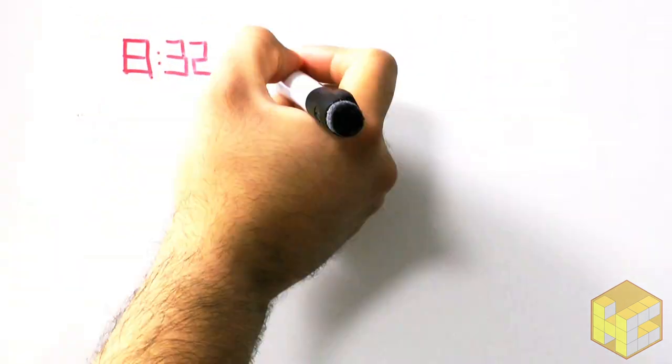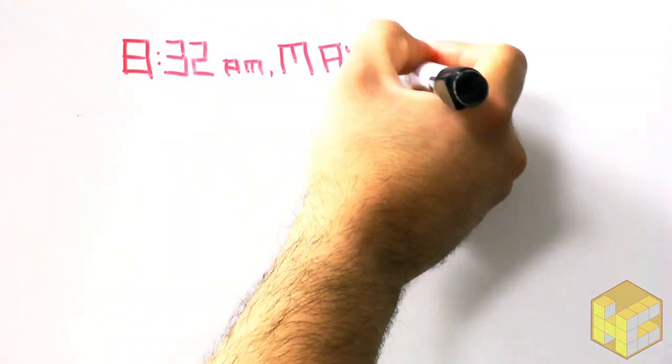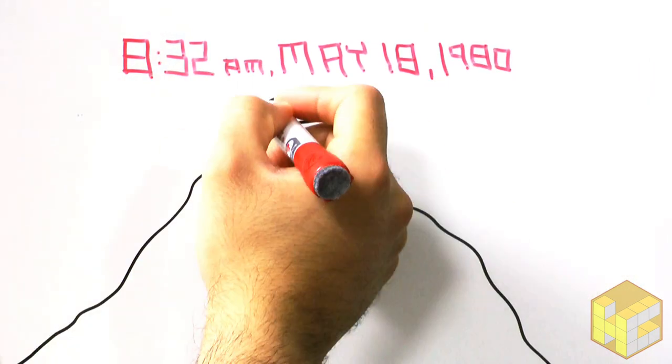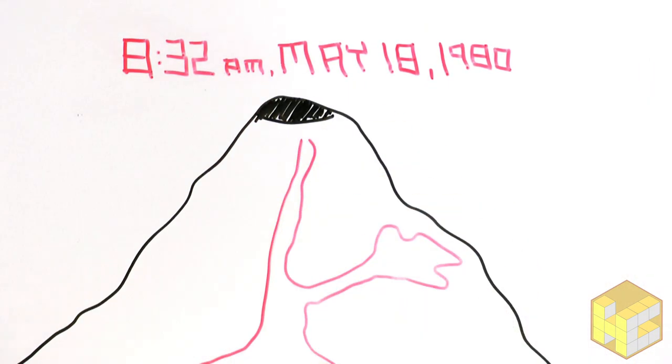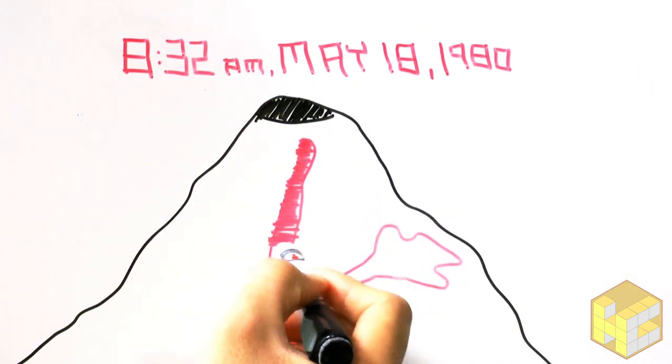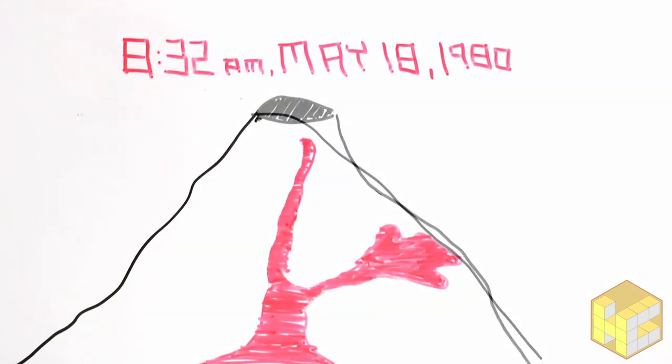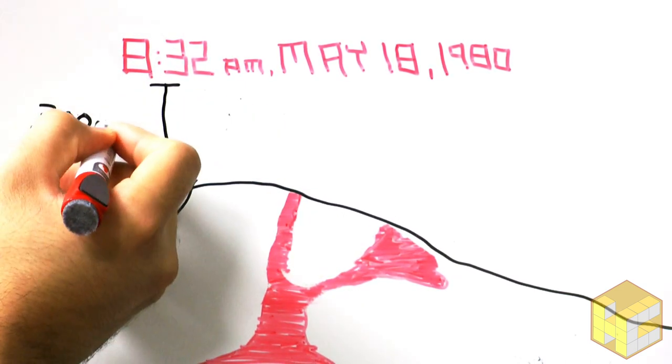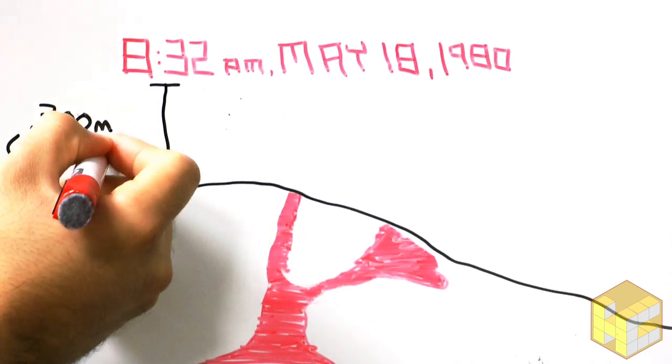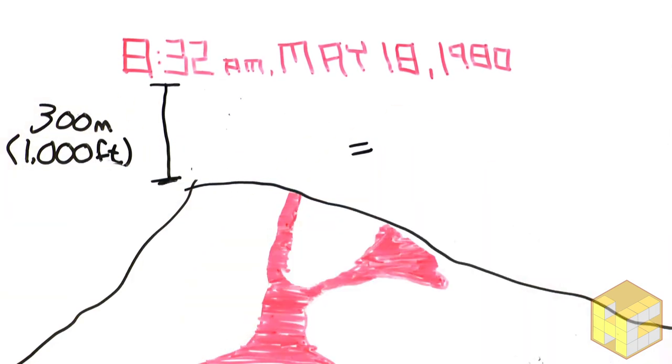At 8:32 a.m. on May 18th, a magnitude 5.1 earthquake rocked the mountain, triggering the largest debris avalanche in recorded history. The northern bulge and the summit slid away in one enormous landslide, releasing the pressure that had been building up inside of the volcano. The total volume of the landslide was two and a half cubic kilometers.